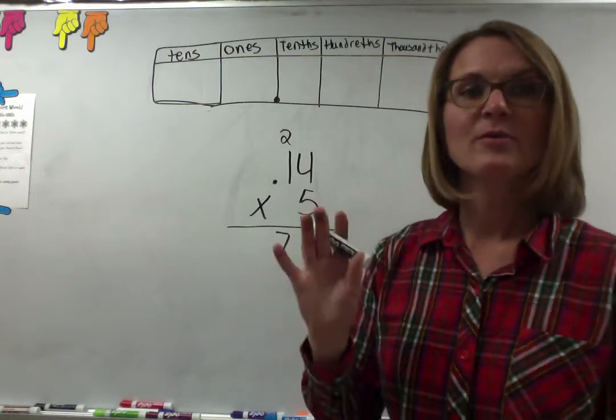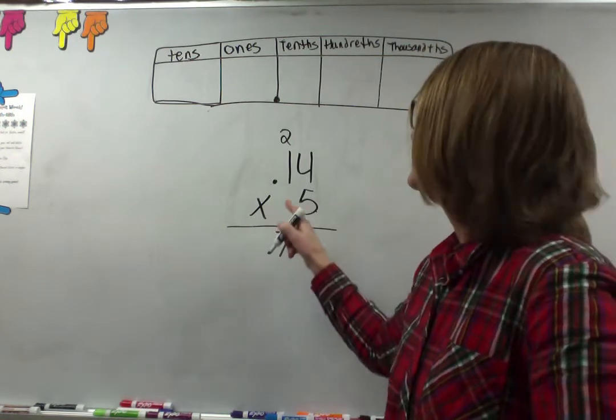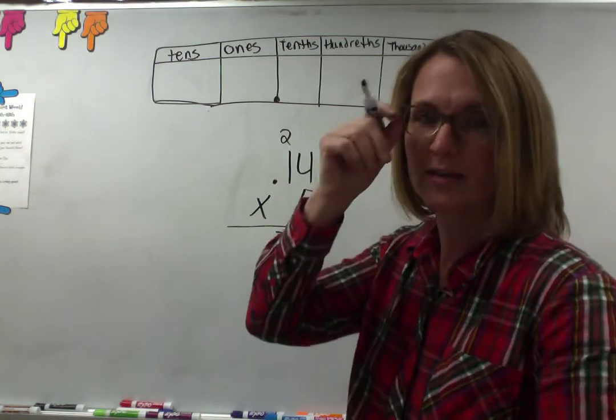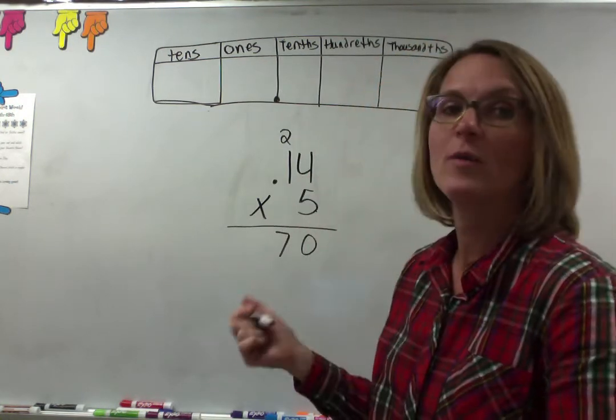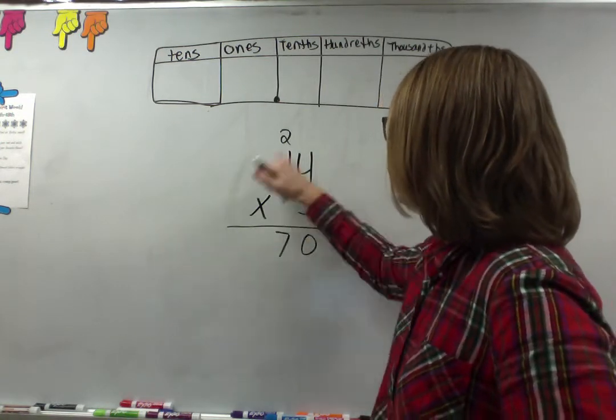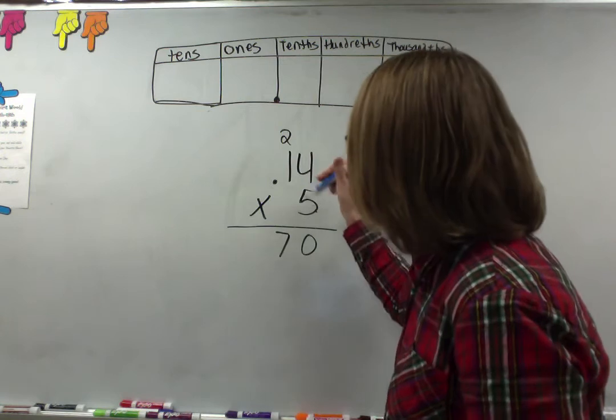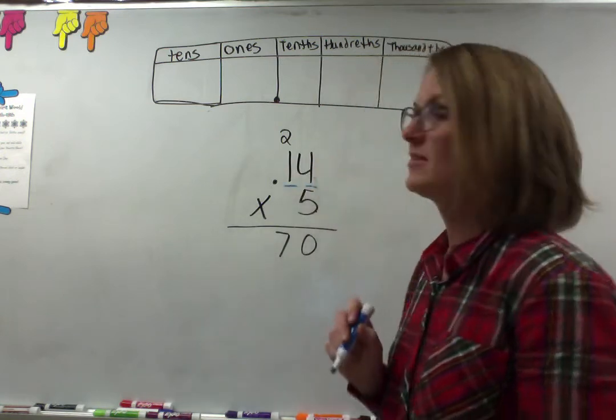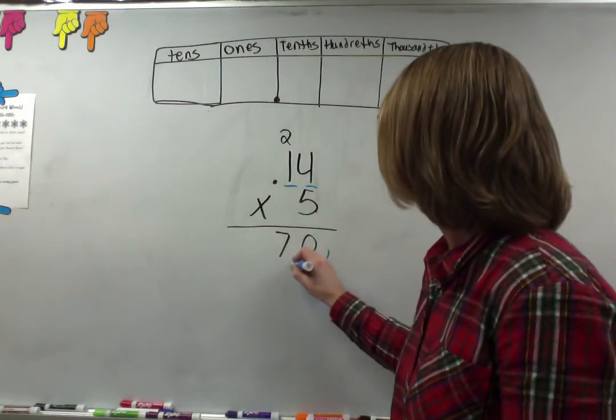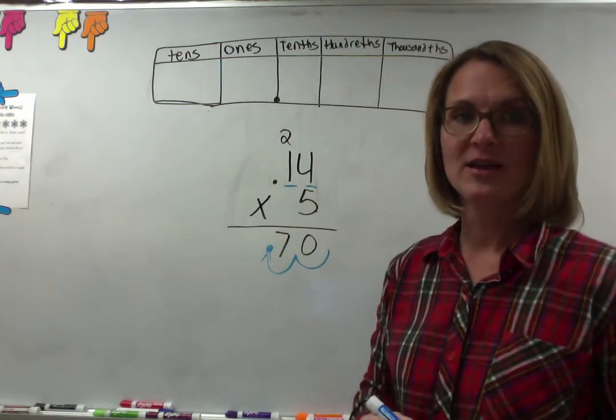So you have 70, but remember yesterday when we made this model we said it's not 70 wholes because we're multiplying by 14 hundredths not 14 wholes. So the answer has got to be 70 hundredths. Here's the technical way that you figure that out. You look and say in this whole problem if I find the decimal, there are two numbers after the decimal. So I go down to my answer and I move the decimal two places into my answer from the end and I'm going to get 70 hundredths.